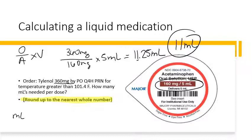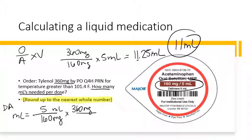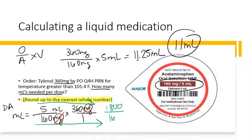For dimensional analysis on this same problem, you're solving for mLs — so put 5 mLs over 160 milligrams. Write your 360 milligrams order and place 1 to hold the place value. Cancel out like units. Multiply the top across: 1,800. Multiply the bottom: 160. Dividing 1,800 by 160 gives 11.25 mLs. Remember, round to the nearest whole number: 11 mLs.